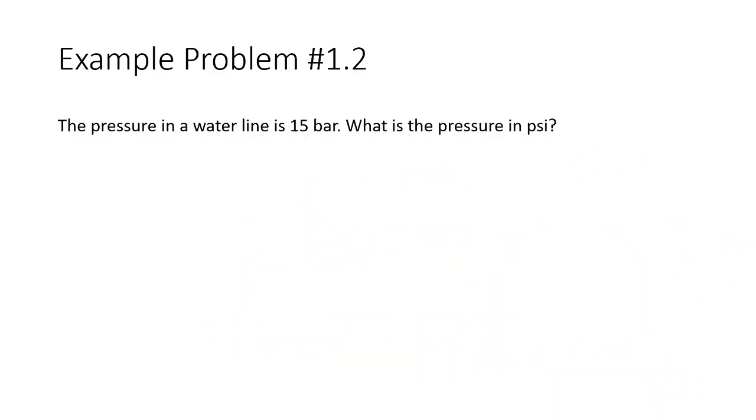So for the second problem, it's going to ask us, what is the pressure in psi of a water line that's given as 15 bar? So now we need to convert from bar into psi. We're going to do this as a two-step process just to show you what the unit conversion process is like if you have to do two unit conversions. So we know that one bar equals 100 kPa.